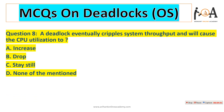Question number eight is: does a deadlock eventually keep the system throughout and cause CPU utilization to increase? No — a deadlock never increases CPU utilization; it will drop the throughput, meaning it will drop the efficiency. So option B is the right answer.